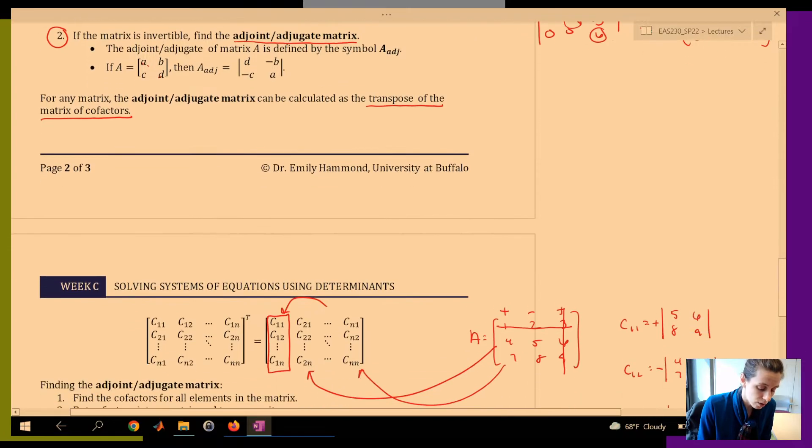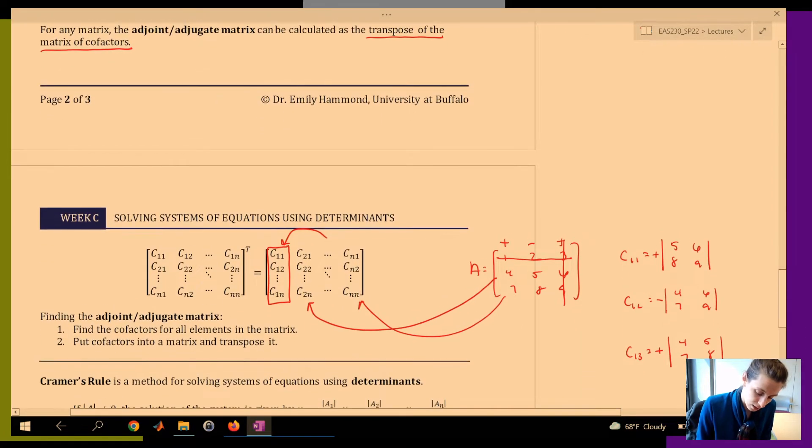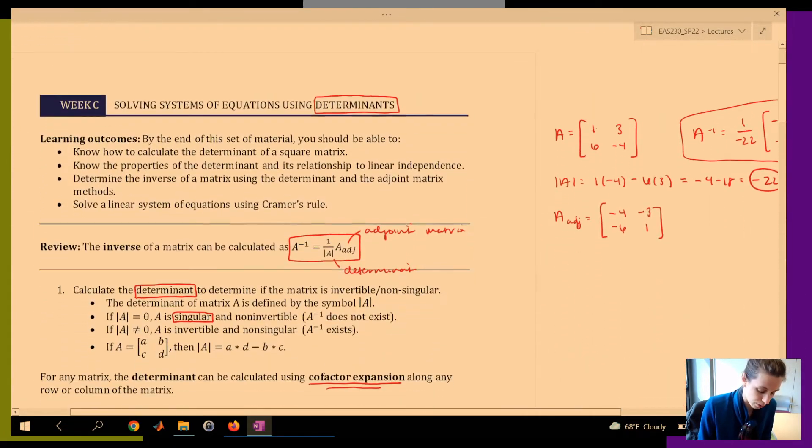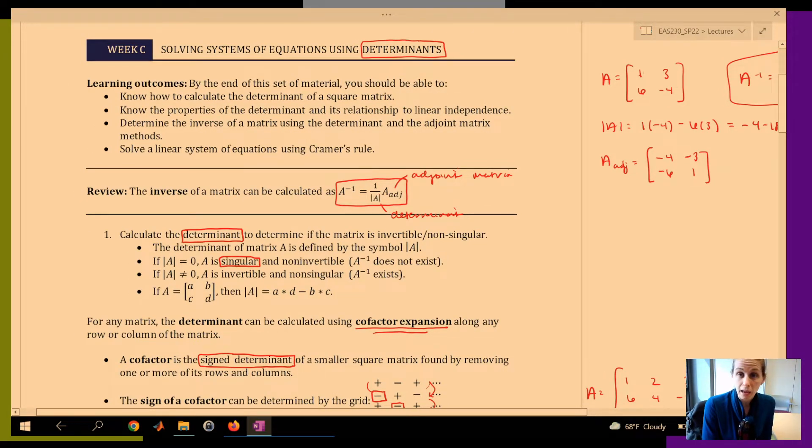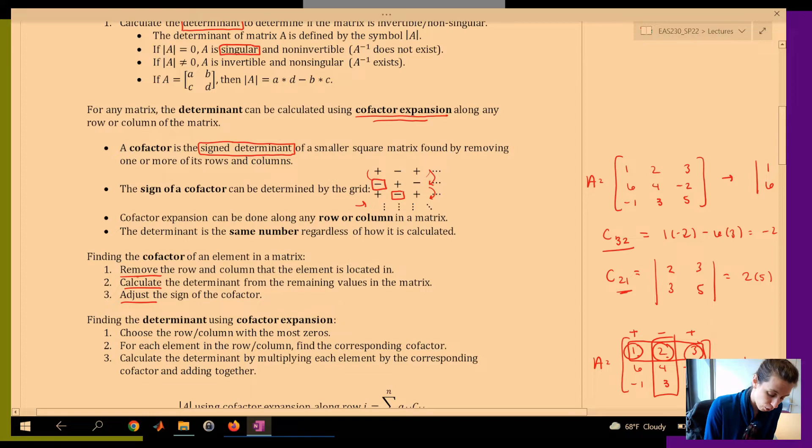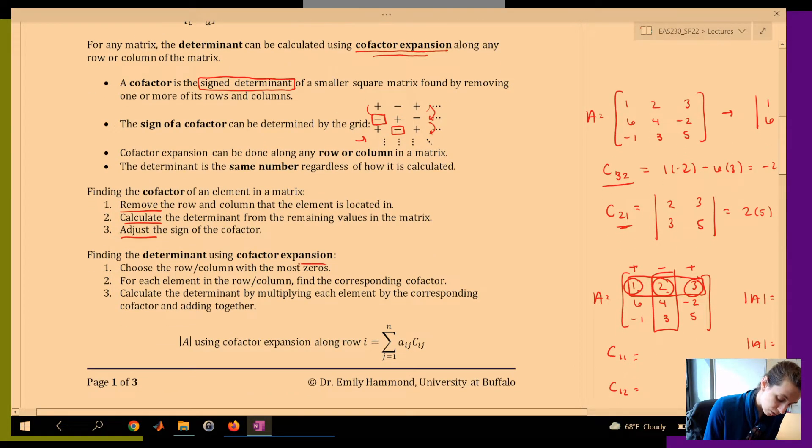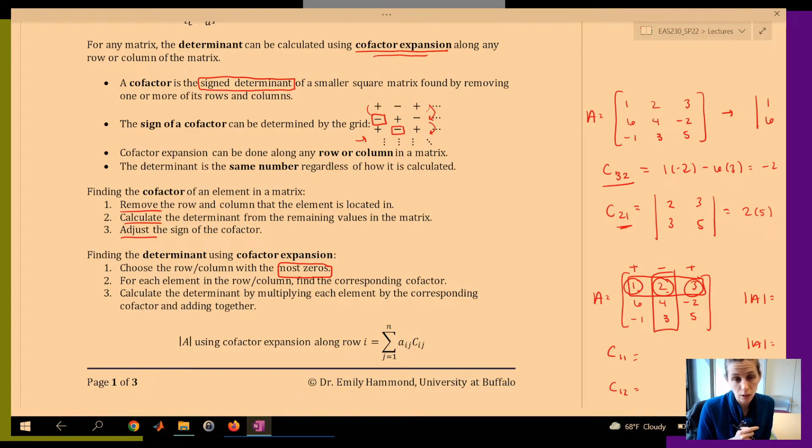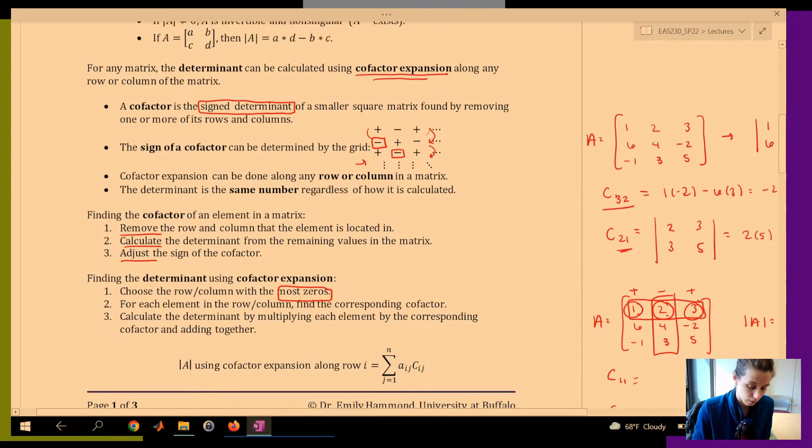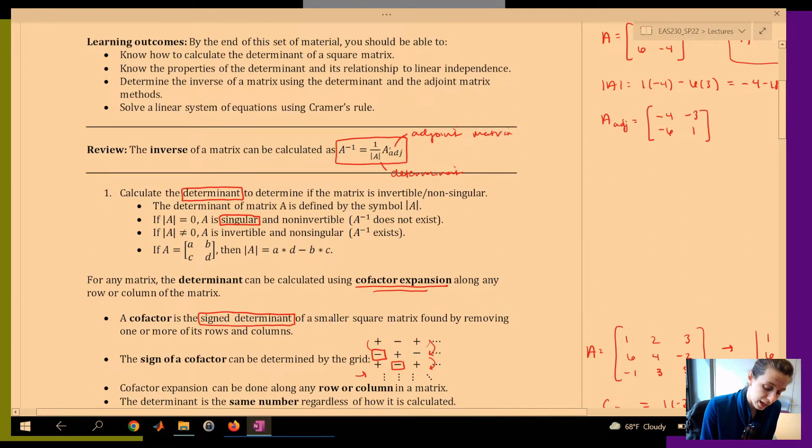So in order to calculate the inverse of a matrix, we're going to go all the way back up to the top. We're going to find 1 over the determinant of A. For any matrix, you can use cofactor expansion. Pick the row with the most zeros. Find the cofactors for every element in that row. Multiply each cofactor by its corresponding element and add it together.